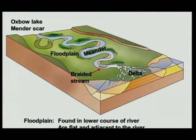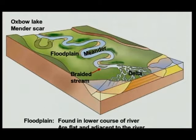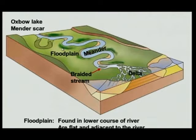Now we are going to have a look at fluvial landforms. We cannot do all the landforms, but we are going to try to do most of them. I am especially going to have a look at meanders and waterfalls, because those are your popular exam questions. If you ever look at your fluvial landforms, these are ones you must know — floodplain, meander, braided stream, and delta. You must know all of these things.